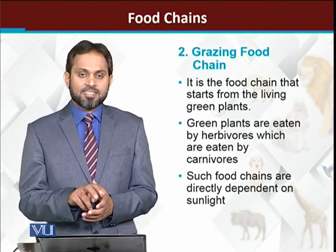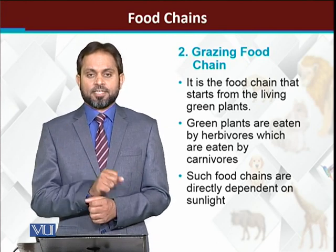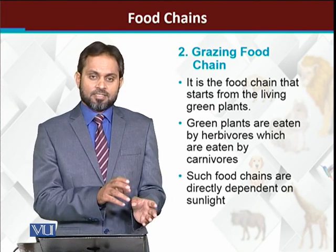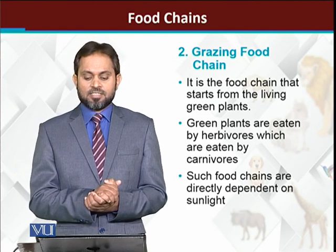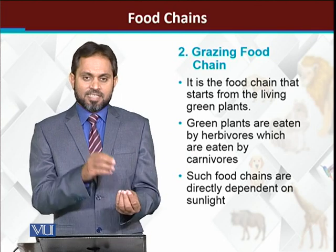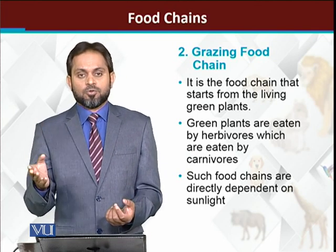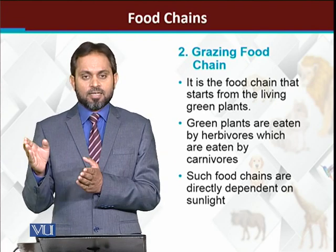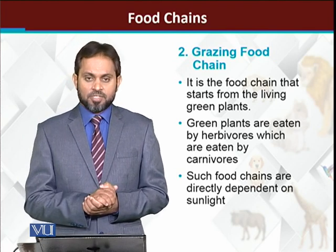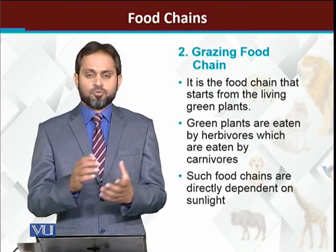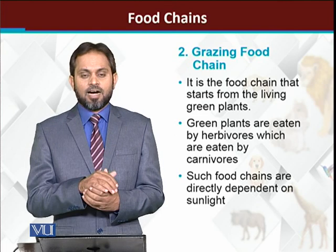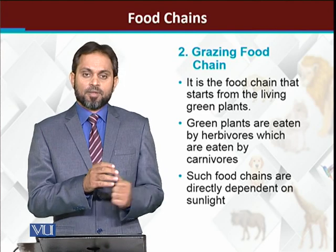These two types are categorized based on their starting point. The grazing food chain is a food chain whose starting point is green plants. Those food chains which start with green plants are called grazing food chains.